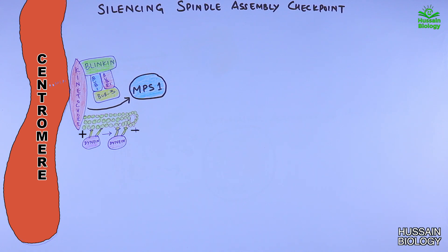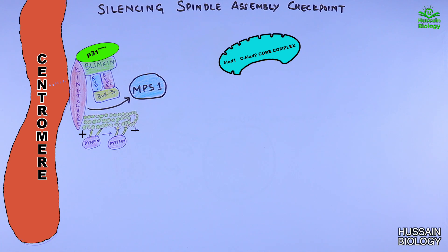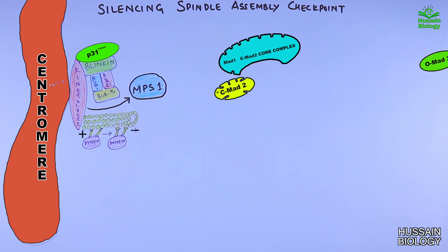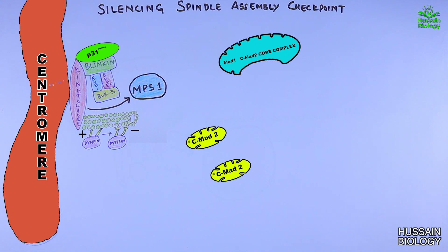What starts the silencing of the SAC: first, we see the recruitment of p31 or TRIP13, which acts as an inhibitory cap for the MAD1-cMAD2 core complex. This core complex acts on oMAD2 and converts it into cMAD2 — meaning the open form of MAD2 protein gets converted into the closed form. The closed MAD2 protein will eventually bind with CDC20, forming the MCC protein together with other BUB proteins.